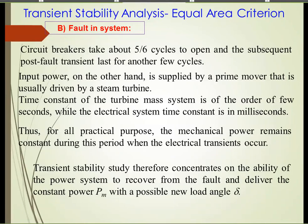A fast circuit breaker can open the line in 1.5 to 2 cycles, meaning 30 to 40 milliseconds. If the fault duration is 100 to 200 milliseconds and the circuit breaker opens in 100 to 120 milliseconds, it will get an alarm indicating the fault still persists. For slow circuit breakers, the fault duration is important in determining whether the line can be reclosed.